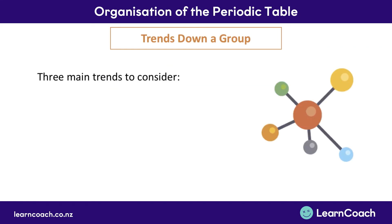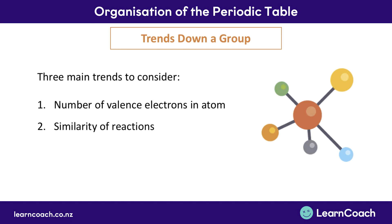When it comes to trends down a group, there are three main trends you need to consider. The first is the number of valence electrons within an atom. The second is the similarity of reactions as you move down a group. And the third is changing reactivity as you move down a group. We're going to look at each of these in turn.